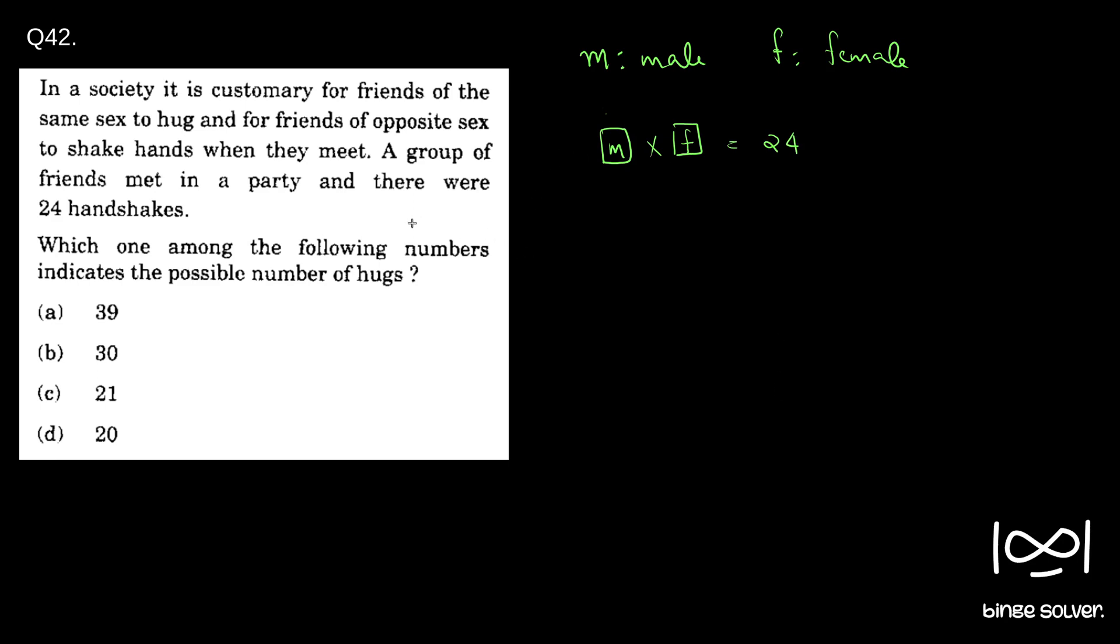Now, what about number of hugs? So it is said two people from the same sex when they meet hug. So how many ways can we select two people from M and how many ways can we select two people from F? So it is MC2. In MC2 ways, we can select two people from M. So in this MC2 ways, in all those combinations, people hug each other. Similarly, in FC2 ways, we can select two people from M and all those combinations, people hug each other.